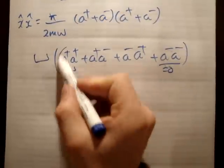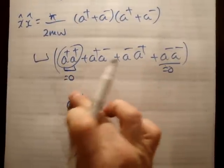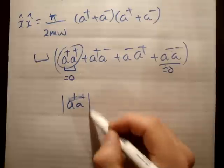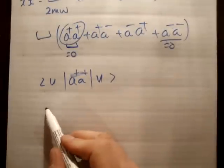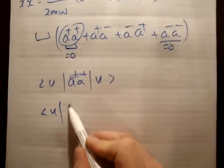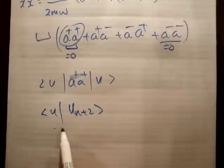I'll show you very quickly why. If you plug this, a plus a plus, like this. If you plugged it into an integral like that. Okay, what's going to happen? Well, you're going to get u and you're going to get un plus two. Okay? And this is equal to zero.